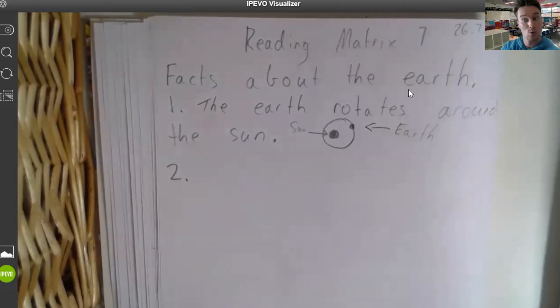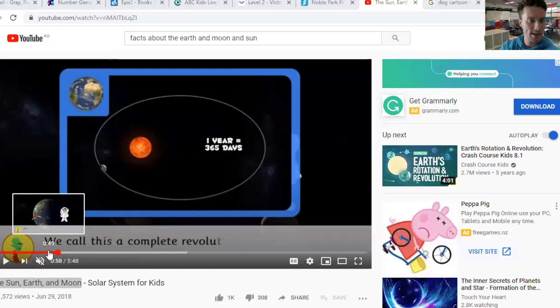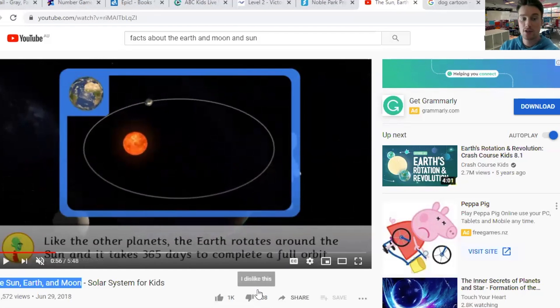So let's do number two. So the other fact that we were looking at on this great little video, and it only goes for a couple of minutes, is let's go back. Okay. So sorry, it's a bit hard to see with the text, but the other fact in this one part of the video, so you might need to watch and pause and get your facts that way. It takes 365 days to complete a full orbit or a full rotation.